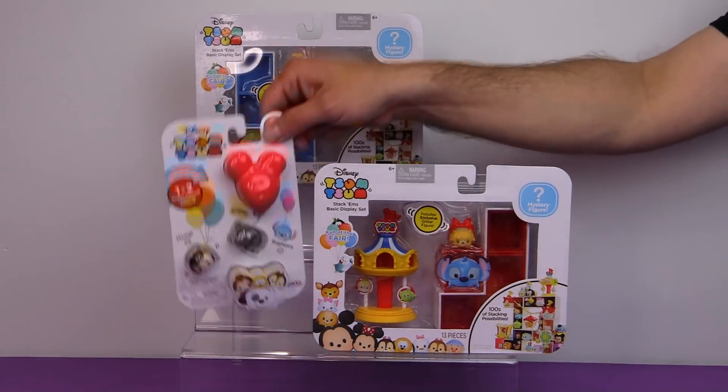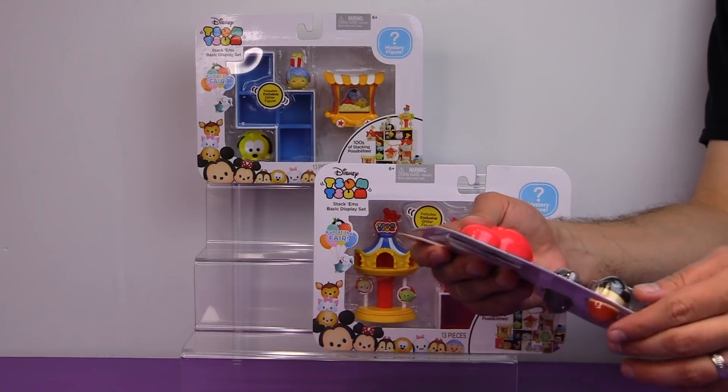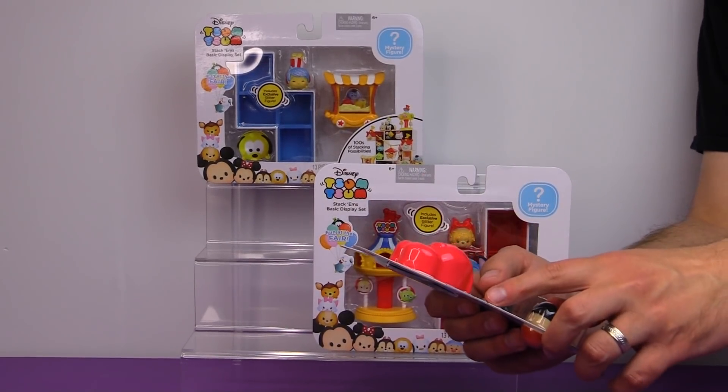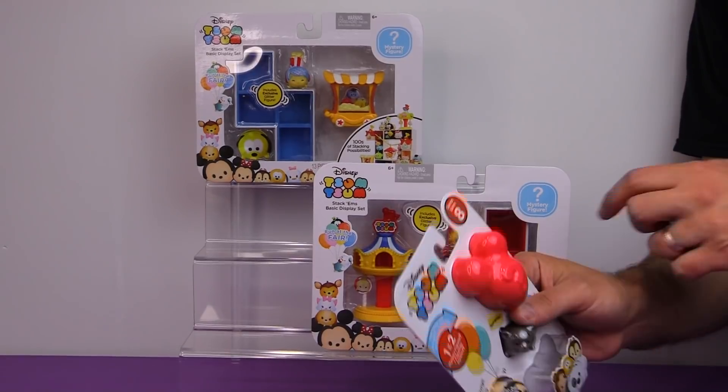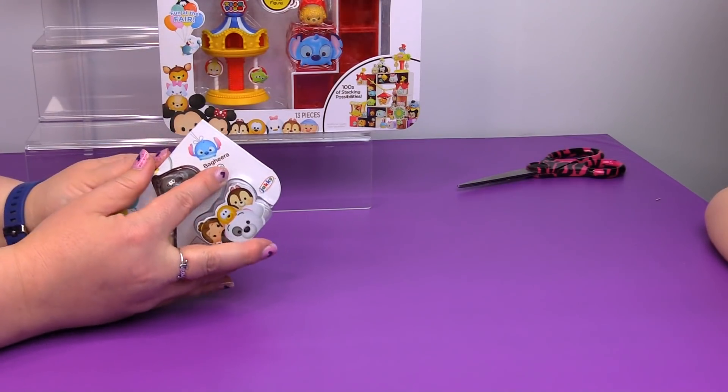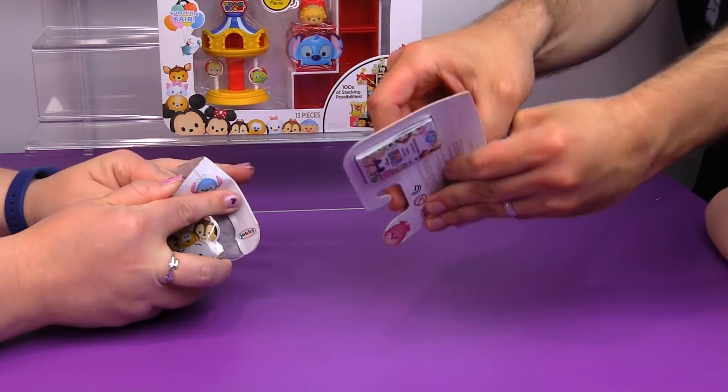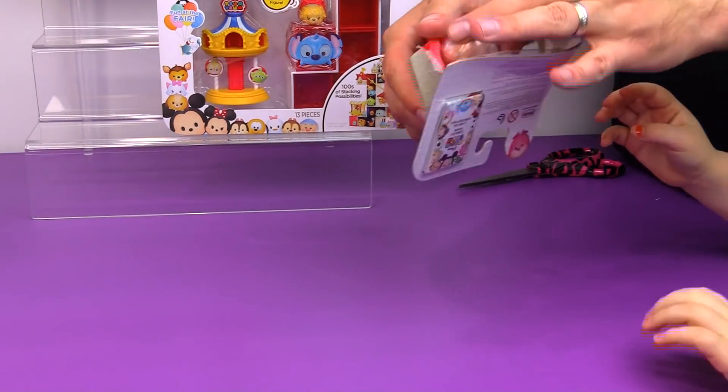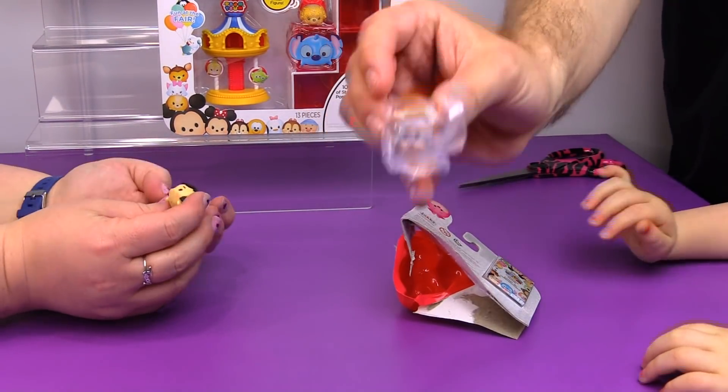So let's open up this two pack first and you can help open the balloon, okay? And will there be one or two mystery figures in this balloon? Okay, I'll open up this one. Okay, here we go. The mystery out of the balloon. Oh look! It's King Louie the monkey! Awesome!